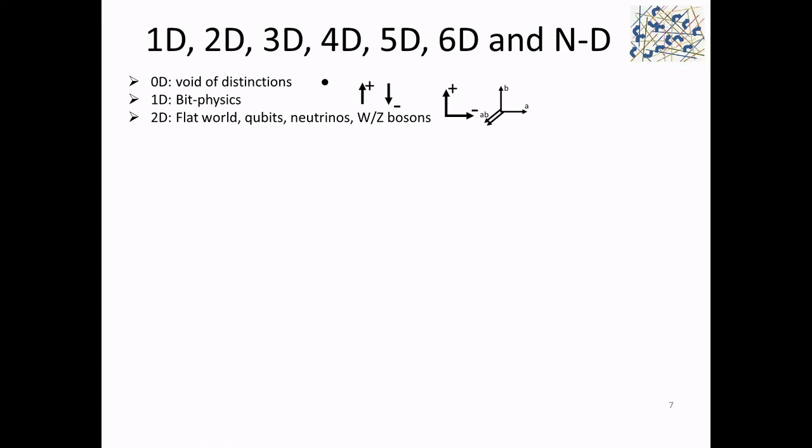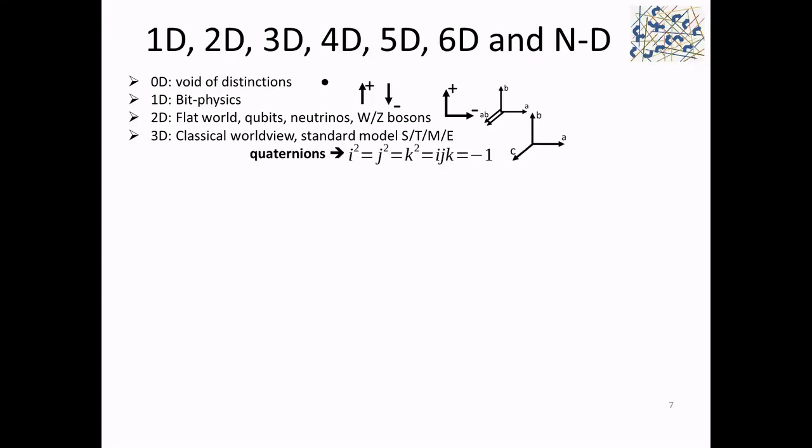You also get neutrinos and bosons from two dimensions. Neutrinos and bosons are the hardest things to see in the universe — and that makes sense because they're two-dimensional. Then you get to 3D and you have a classical worldview and the standard model with space, time, matter, and energy. Going further, you get quaternions — i, j, and k — which turn out to be equivalent to geometric algebra bivectors, letting you represent space itself in geometric algebra.